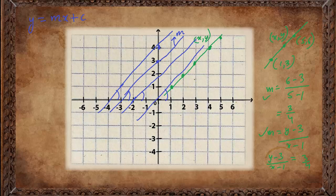This line is intersecting at 4, this one at 3, another at 2, and this one at 1. That means we can write down the equation using a trick which is known as the slope-intercept form.